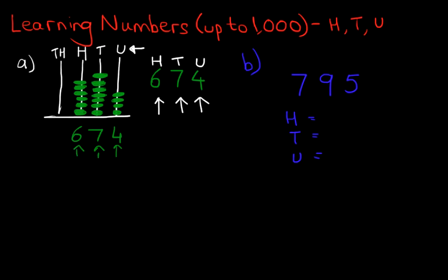Start on the right hand side first. I'm just going to change colors to highlight this. Start on the right hand side first. This 5. On top of the 5 you can put the U for units. There are 5 units in 795. Now move on to the digit on its left. This is the tens. And look over here in the abacus. It's exactly the same. So there are 9 tens in 795.